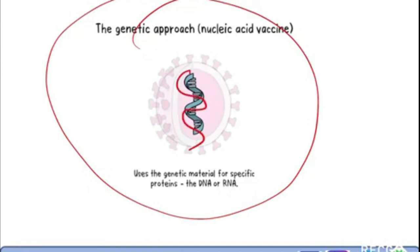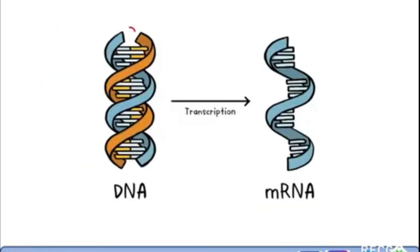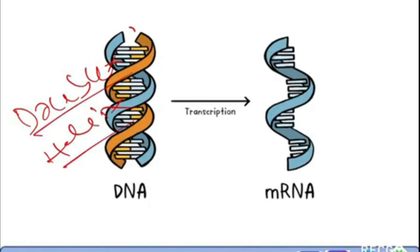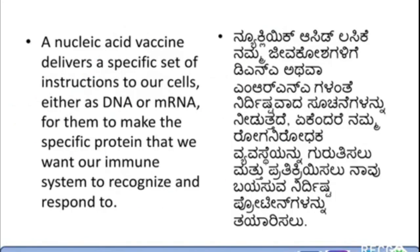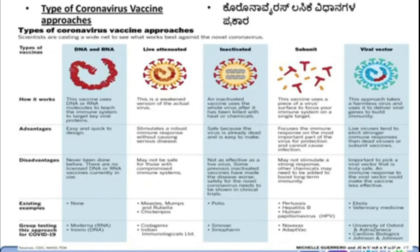A single helix means it will be an RNA-based vaccine, while DNA is a double helix structure. Watson and Crick discovered the DNA structure. DNA will be transcribed into RNA — transcription — and then into messenger RNA. In our cells, DNA is first turned into mRNA or messenger RNA, which is then used as a blueprint to make specific proteins. A nucleic acid vaccine delivers a specific set of instructions to our cells, either as DNA or mRNA, to make the specific protein we want our immune system to recognize and respond to.